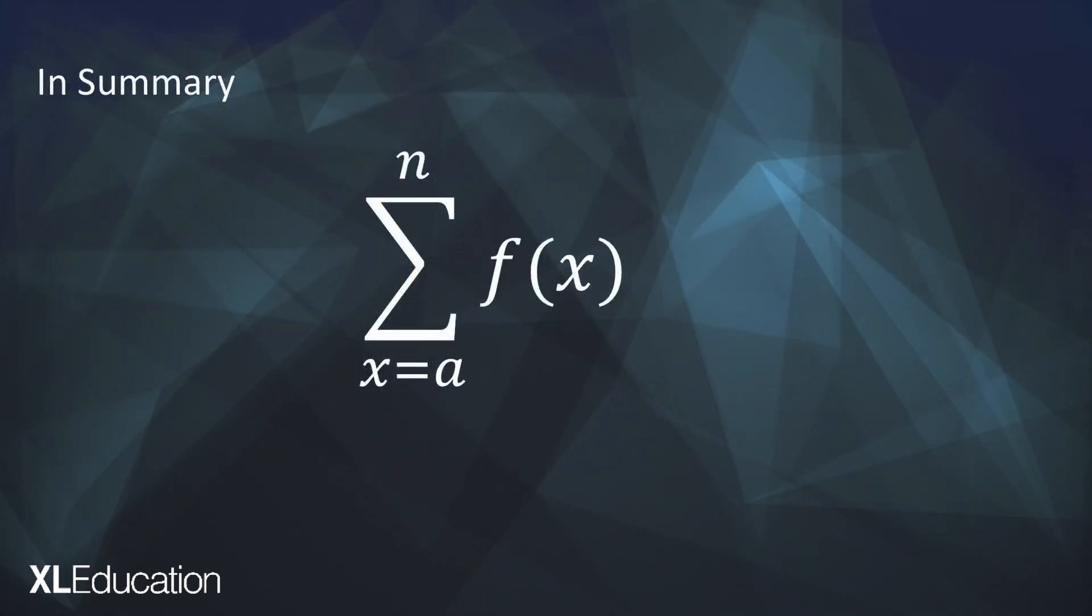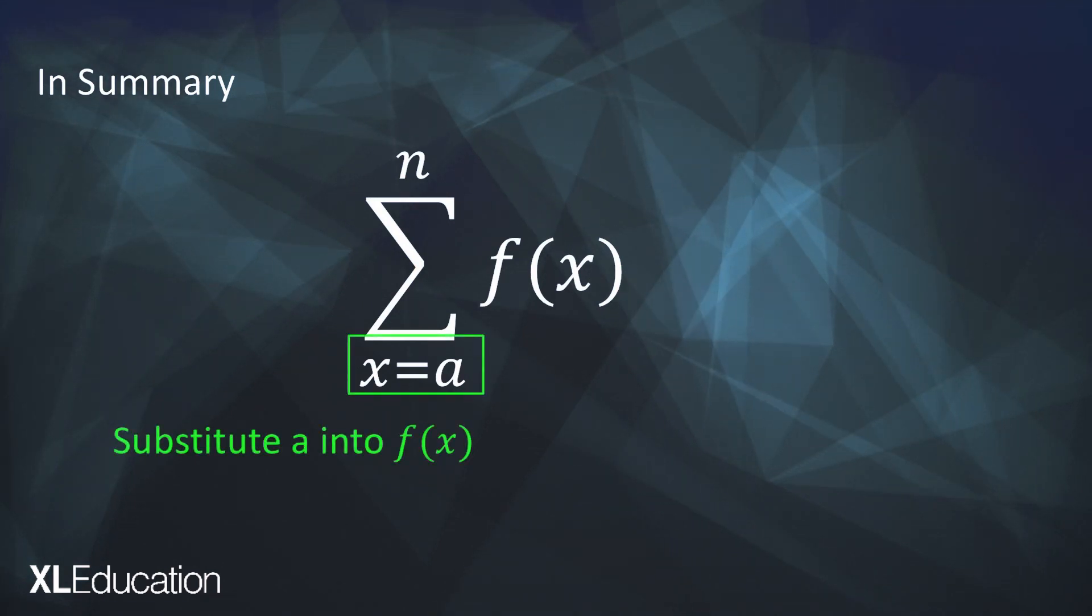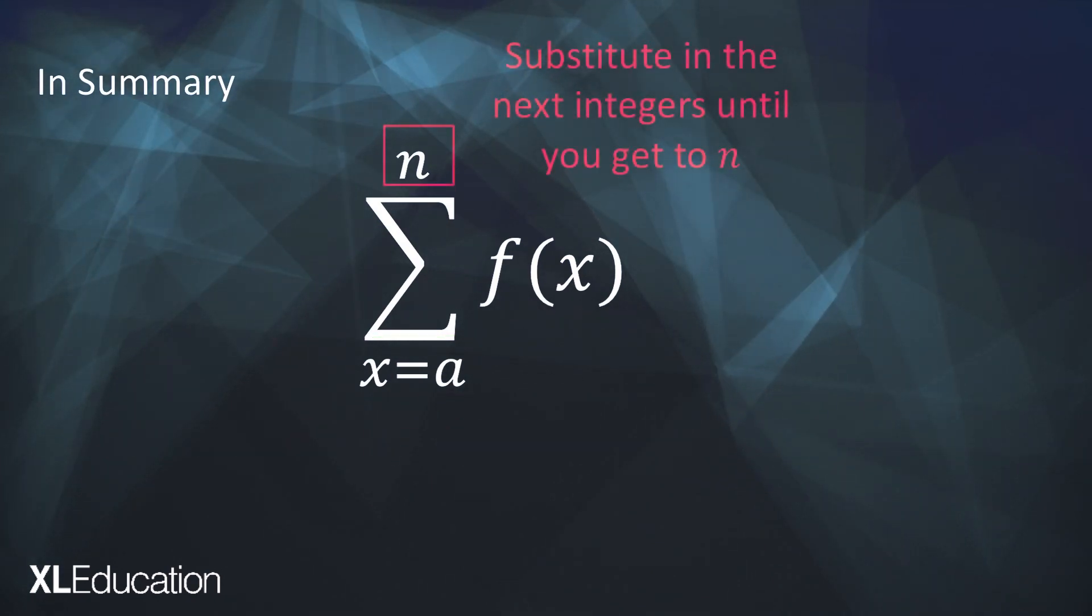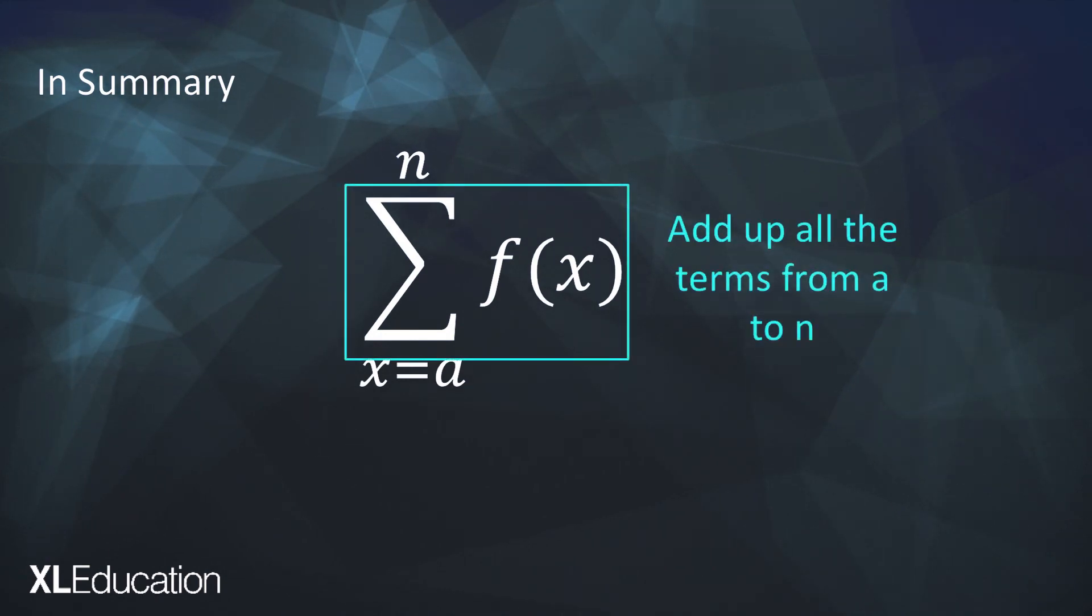So in summary if you've got this funny looking sigma thing, that x equals a at the bottom means you're going to start by substituting a into f of x. That n at the top means you're going to substitute in sequential integers until you get to n. And then once you have found all these terms starting at a all the way to n you're just going to add them all up.